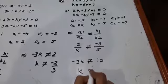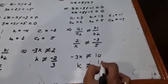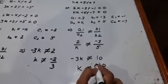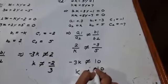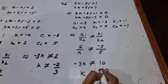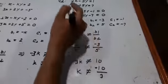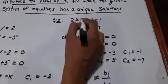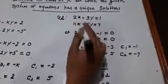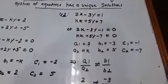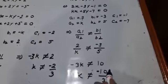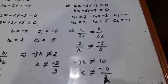And k not equal to 10 upon 3. And minus will go to the numerator. Sorry, here it's not 2k, it's 2x. So the value of k is minus 10 upon 3.